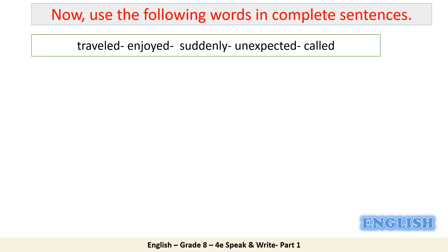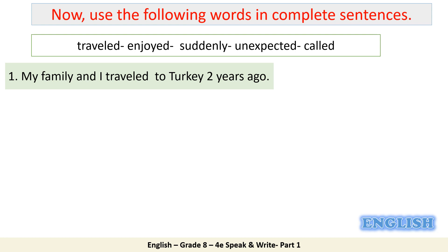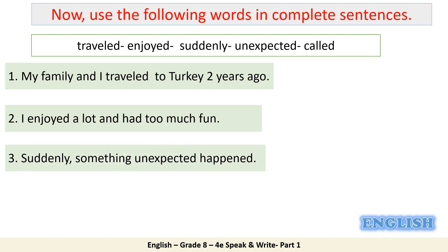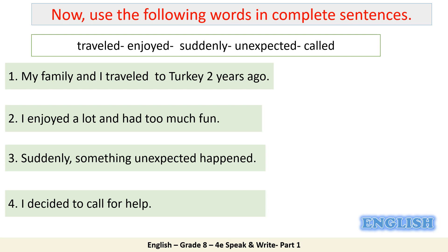Now you should use the following words in complete sentences. We've got five words: traveled, enjoyed, suddenly, unexpected, and called. For example — traveled: my family and I traveled to Turkey two years ago. Enjoyed: I enjoyed a lot and had too much fun. Suddenly something unexpected happened. And: I decided to call for help.